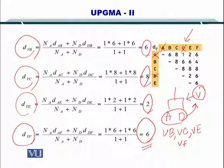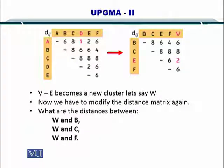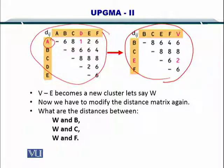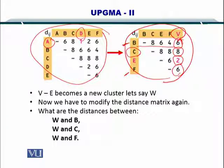Just remember 6, 8, 2 and 6. This distance matrix is replaced by this distance matrix. You can see that there is no A here, no D here. But there is a new column that is V. The distance between V and B is 6, V and C is 8, V and E is 2, and V and F is 6. Essentially this distance matrix has been converted into an updated distance matrix.